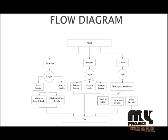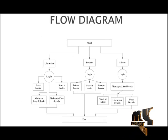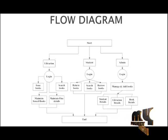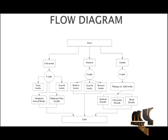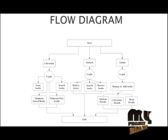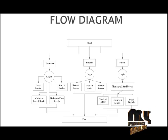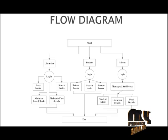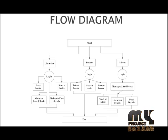Let's see the flow diagram. Our project starts from the start menu and the library has three types of flows: one is librarian, another one is student, and another one is admin. The librarian logs into their account and issues books and searches books. The student logs into their account and can return books, search books, and borrow books.